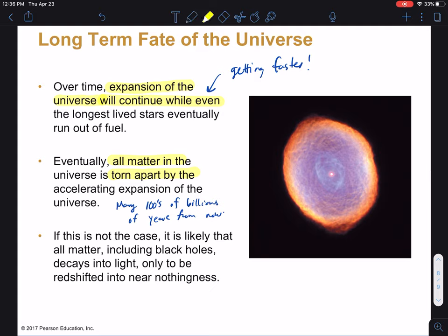And even if this doesn't happen, like I said, there's a lot of uncertainty there. If this is not the case, all matter will decay into light eventually, and as the universe expands, it will be red-shifted into nothingness. So basically all matter and energy in the universe will decay into long-wavelength low-energy radiation. We call this the entropy death of the universe. And so very, very long timescales here. Nothing that we have to worry about.